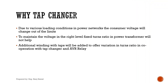Why tap changer? Due to various loading conditions in power networks, the consumer voltage will change out of the limits. To maintain the voltage at the right level, a fixed turns ratio in a power transformer will not help. Additional winding with taps will be added to offer variation in turns ratio, in cooperation with the tap changer and AVR relay.